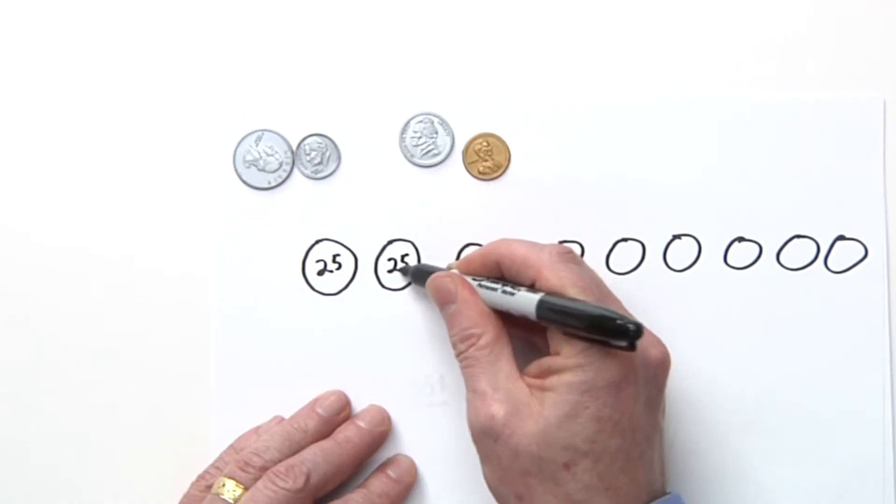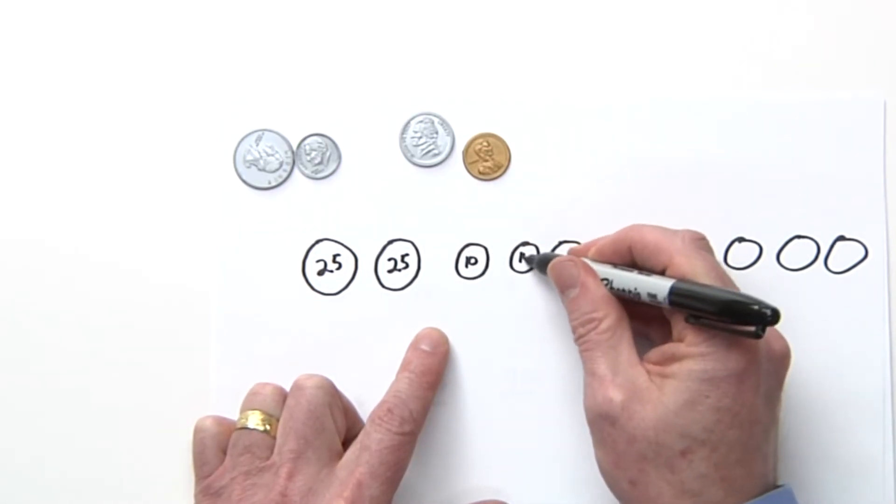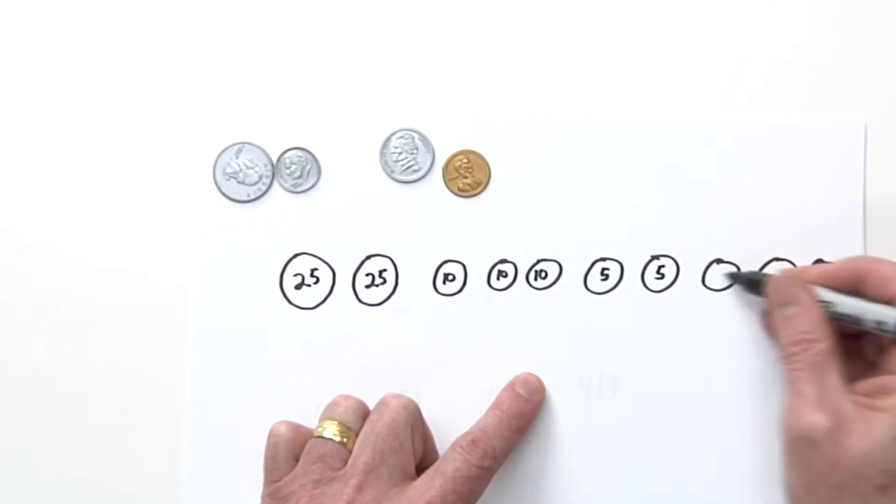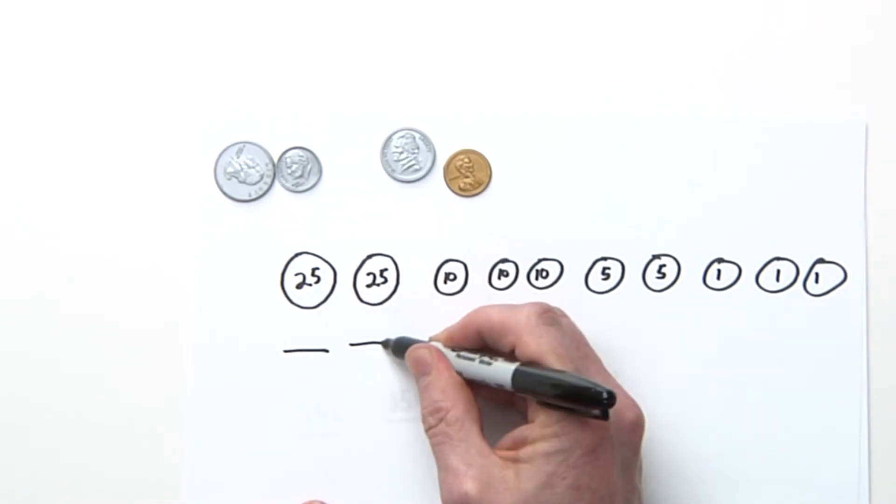Right now what I'm going to do is just put in 25, 25 representing some quarters, and this will be a dime, another dime, another dime. Here will be a nickel, and these will be pennies.